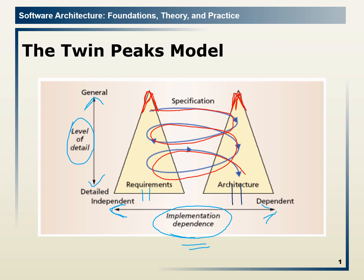The third point is that when the abstraction level of requirements becomes low, the corresponding architecture will also be low. So when the requirements are low, the abstraction level of the corresponding architecture would also be low. Similarly, when the requirements specification is less detailed, the corresponding architecture would also be less detailed.